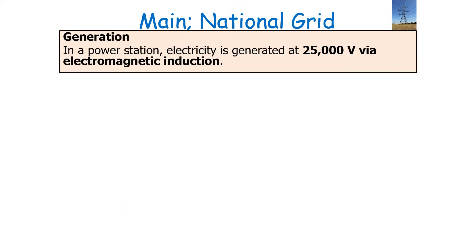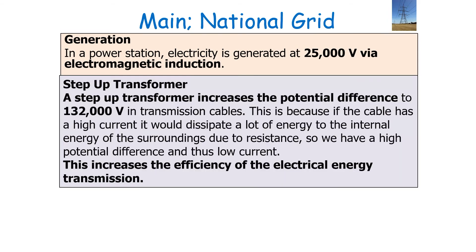To clarify, our national grid consists of the following: generation — in a power station, electricity is generated at 25,000 volts via electromagnetic induction. You then have your step-up transformer, which increases the potential difference to about 132,000 volts in the transmission cables.